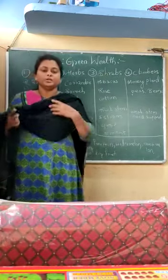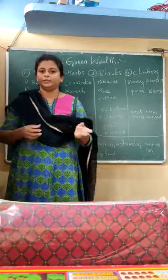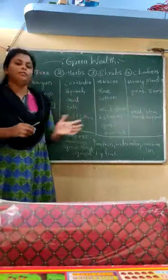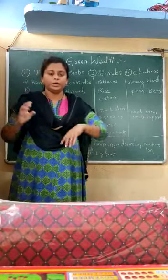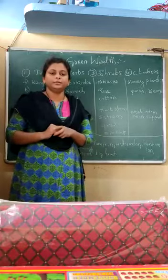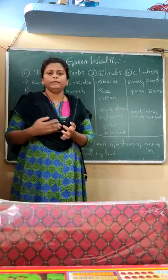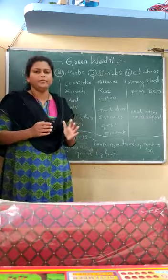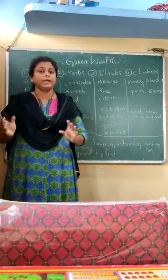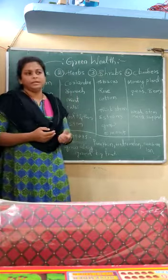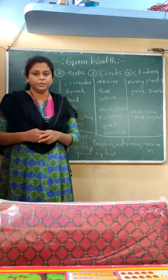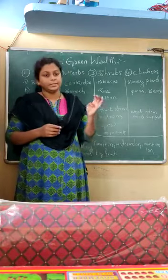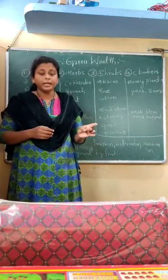Hi children, welcome back. In this video we are going to discuss about the green wealth. As soon as you look around in a very free place or open space, more than everything we see different shades of green. That green color comes from the many thousands of different types of trees around us, but similar trees are very rare to see. The color may be the same green, but the size, shape, and length are all different.